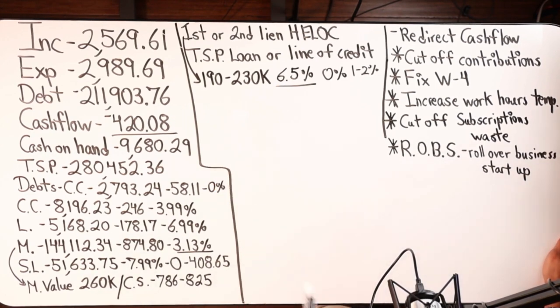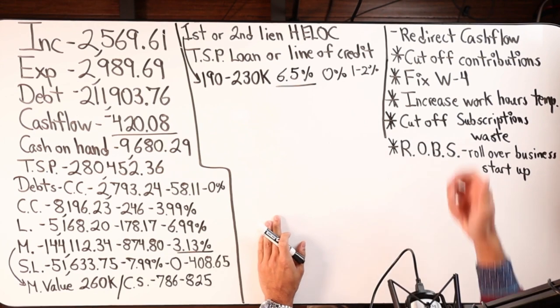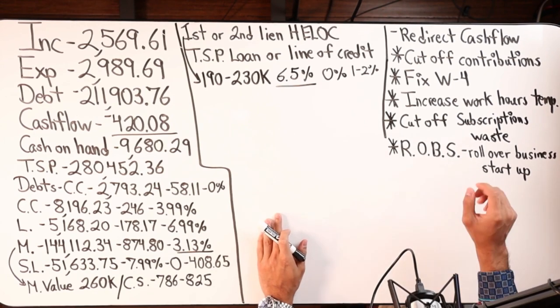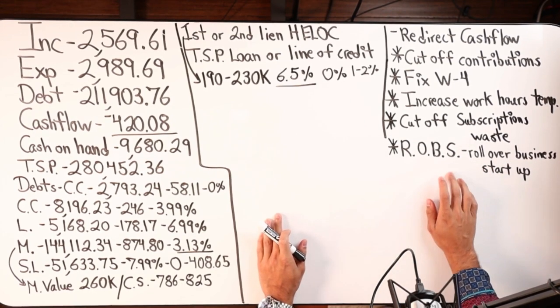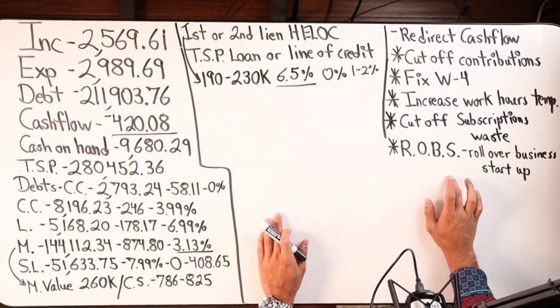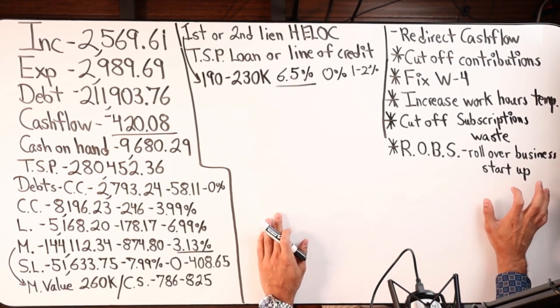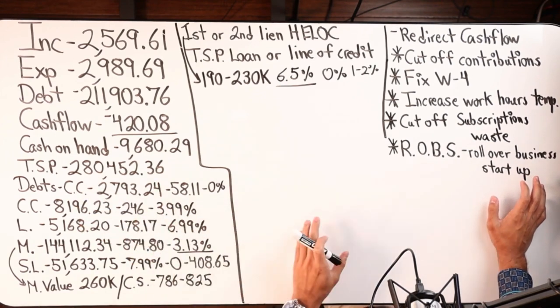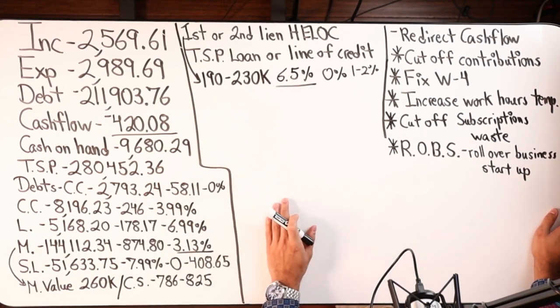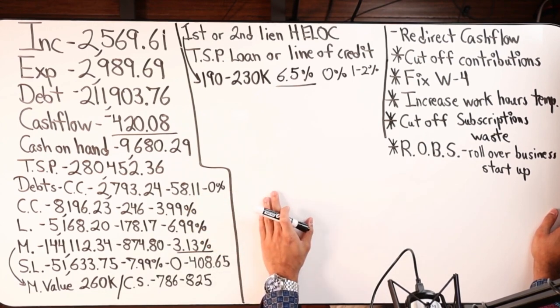This is really cool - another thing that I put here. This is called the ROBS, stands for rollover business startup. This person could potentially - I'm not sure but I have seen this done with 401Ks, not sure if it could be done with a TSP.